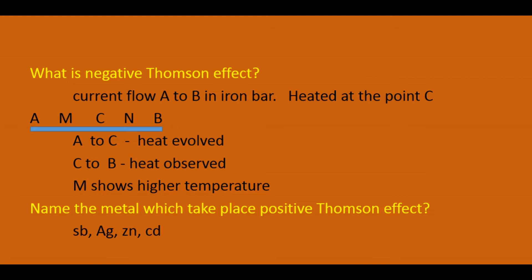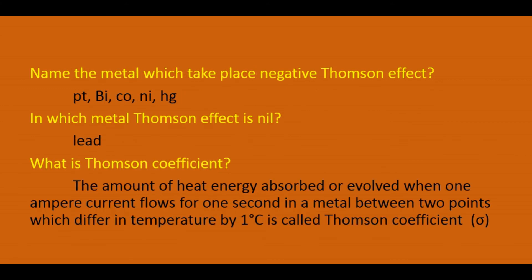The metals in which positive Thomson effect takes place are: cadmium, zinc, silver, etc. The metals in which negative Thomson effect takes place are: mercury, nickel, cobalt, bismuth, etc. In the metal lead, there is no positive or negative Thomson effect — the Thomson effect is nil in lead.